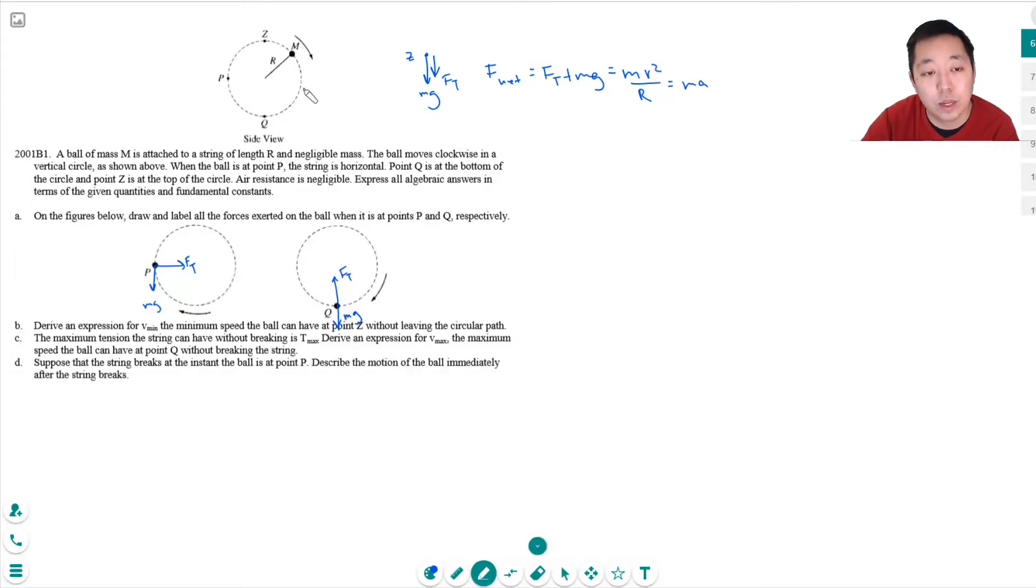MA and this is centripetal acceleration. So if I solve for V, V squared is equal to FT plus MG times R divided by M. And so V is equal to the square root of FT plus MG R over M. Now the minimum this can be is when FT equals zero. Right? There's no tension in the rope. The gravity is just the minimum amount because that will make V the smallest if this is zero.